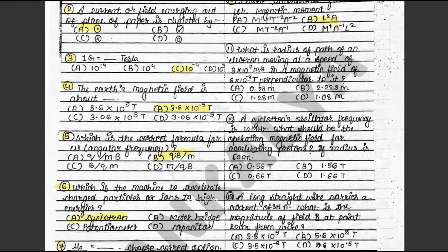Question 11: What is the radius of path of an electron moving at a speed of 3 × 10⁷ m/s in a magnetic field of 6 × 10⁻⁴ Tesla perpendicular to it? The answer is A: 0.28 meter. This is in the textbook illustration 3.